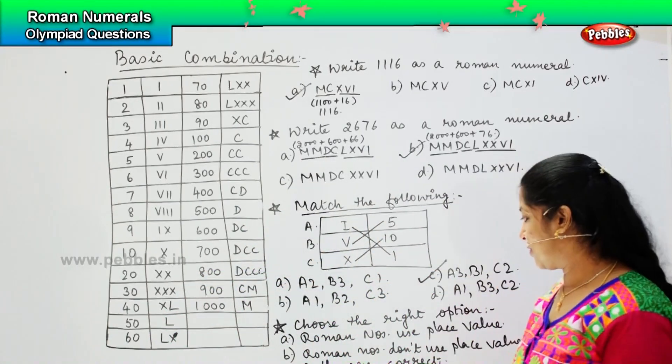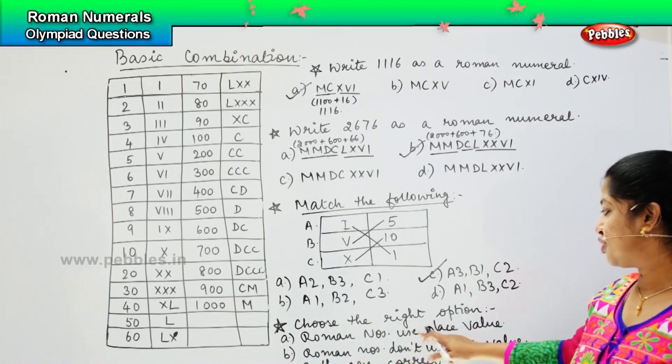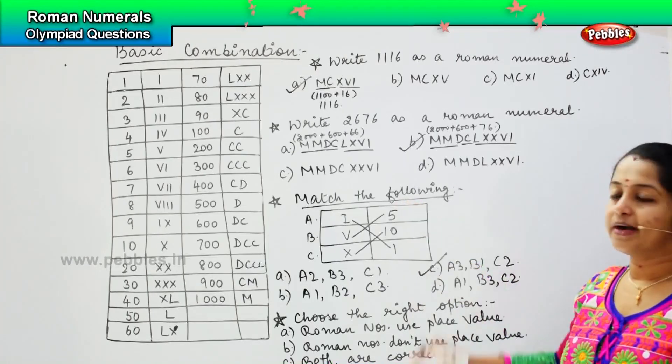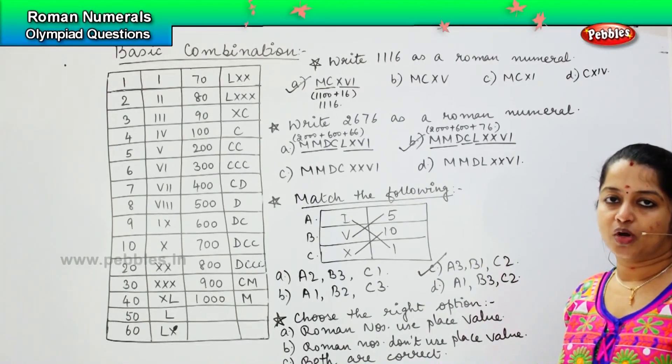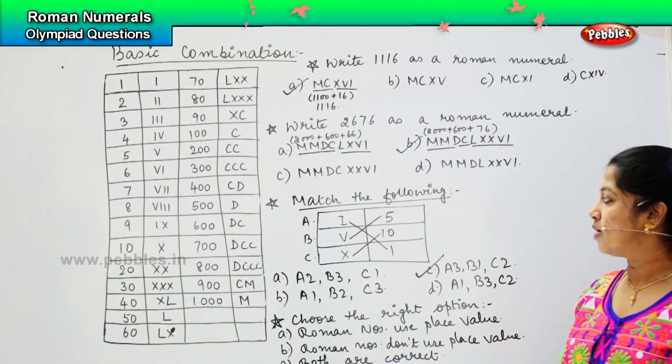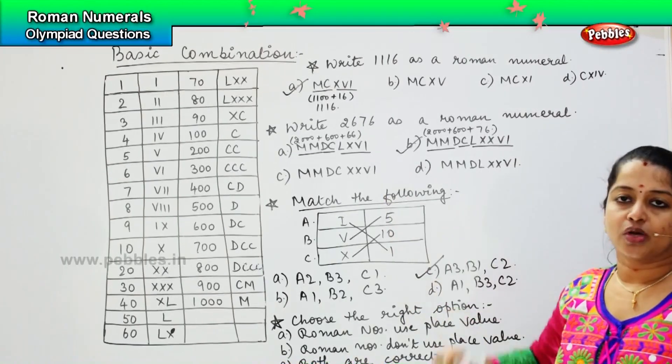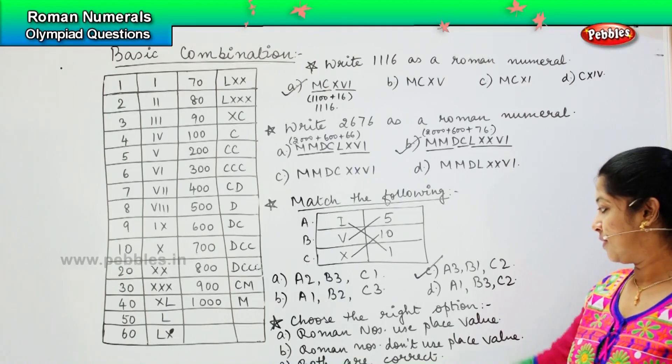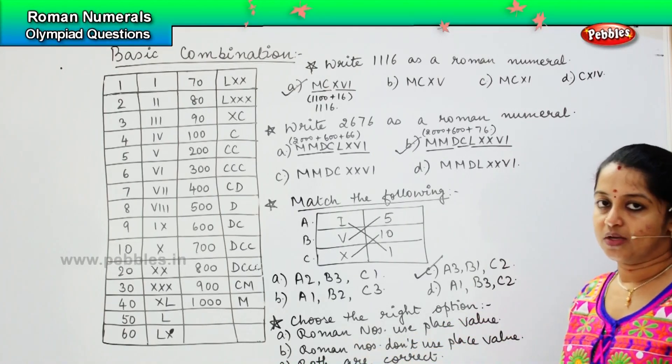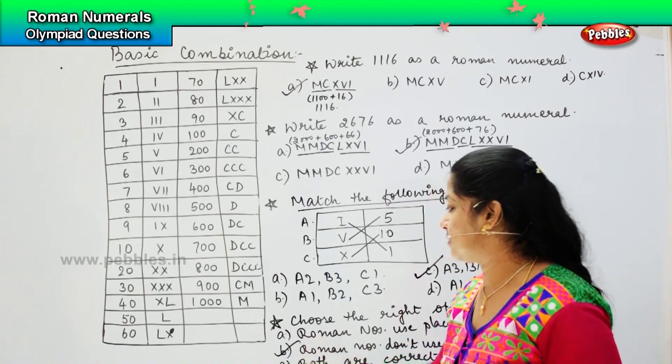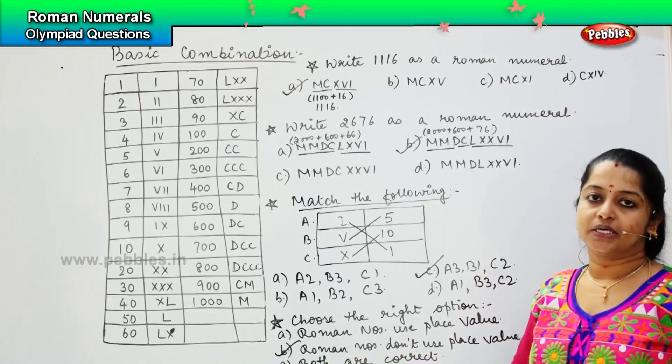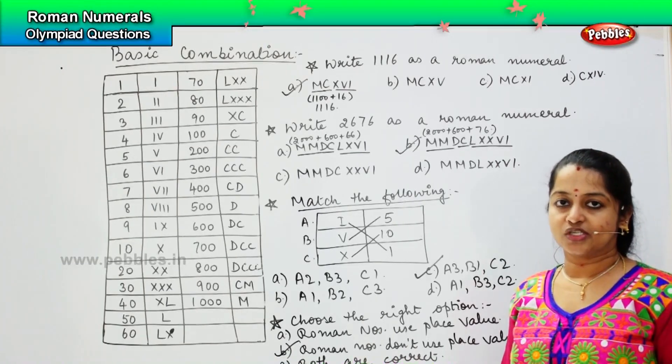So which is the right one, children? Roman numbers use place value - is it correct? No, because in Roman numbers you don't have any concept called place value. Here everything is figured based on the alphabets, so you cannot use the place value concept. Second one says Roman numerals do not use place value. Yes, so that is the right answer. So option B is the correct statement among the given lot. Clear, children?